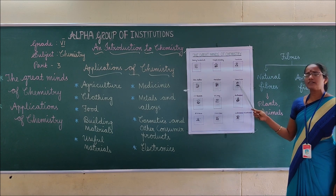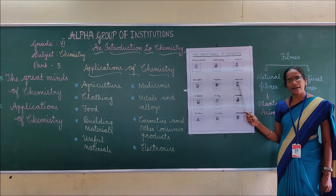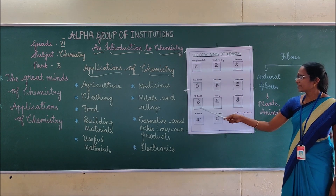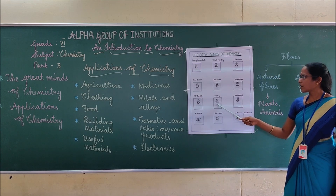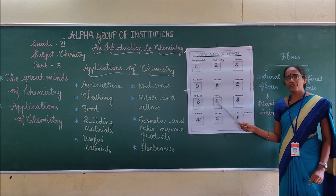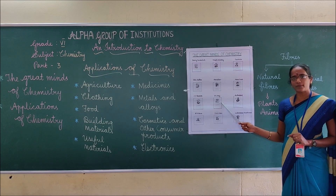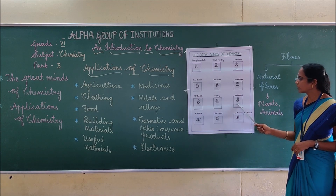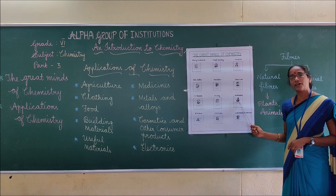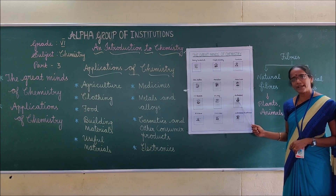Marie Curie discovered the elements radium and polonium. J.J. Thomson discovered electrons. P.C. Rai is a famous Indian scientist, founder of India's first pharmaceutical company, and he is regarded as the father of Indian chemicals. Next: Rutherford. He is regarded as the father of nuclear physics. He discovered the nucleus of an atom.